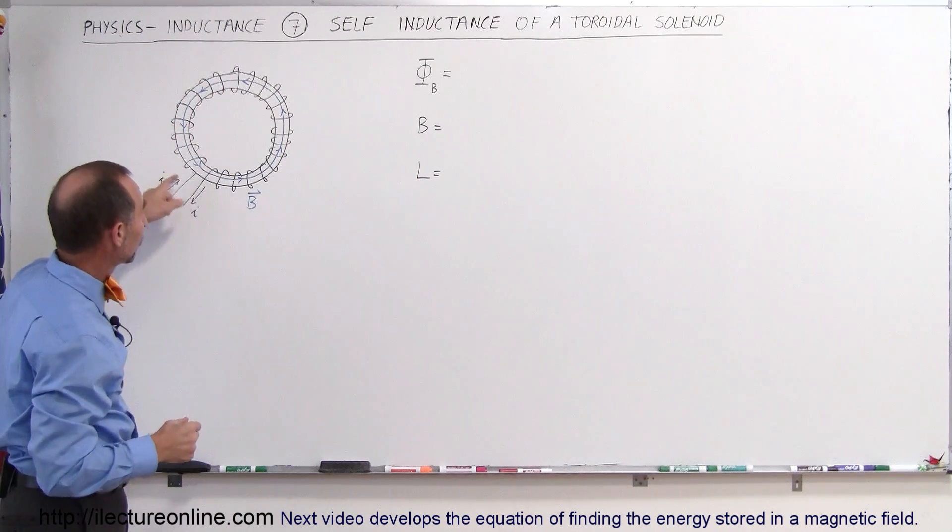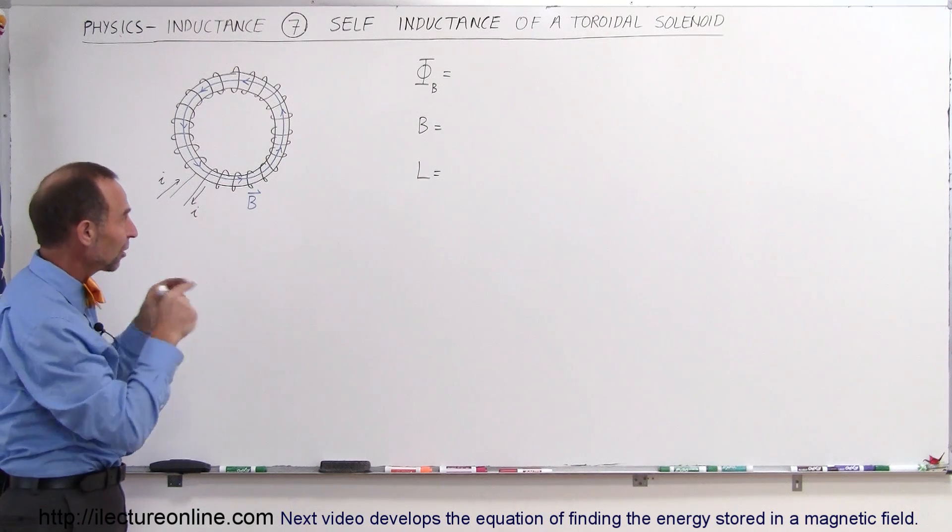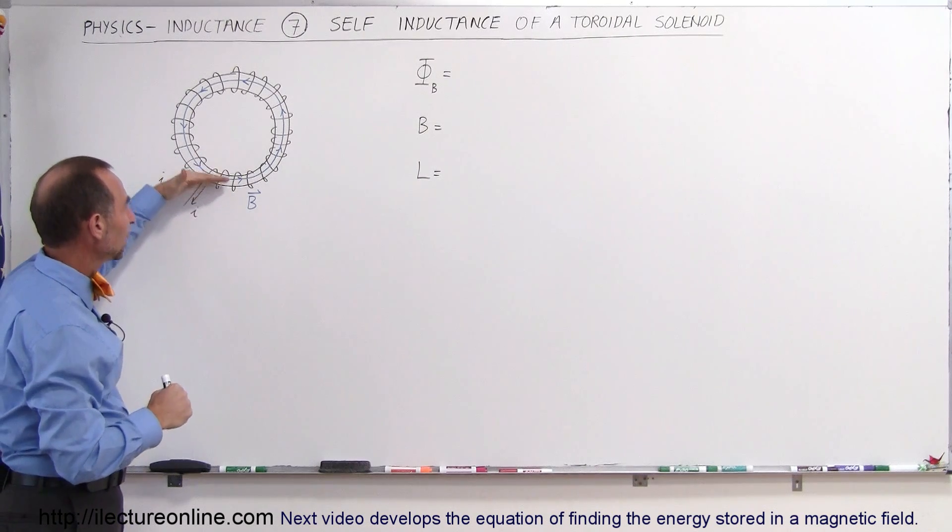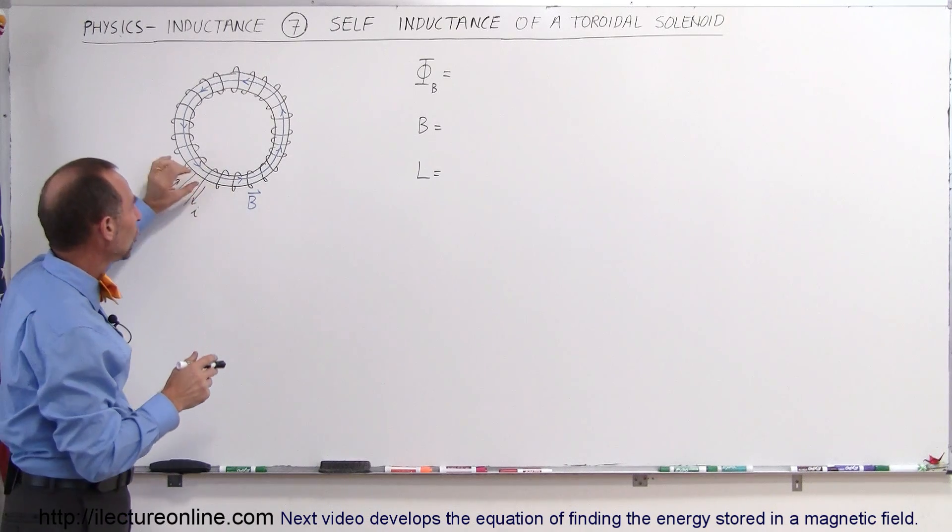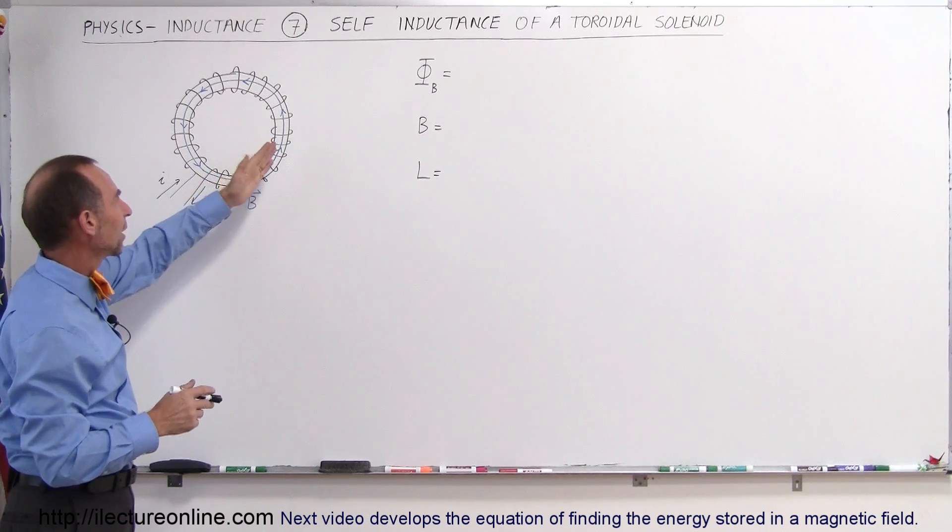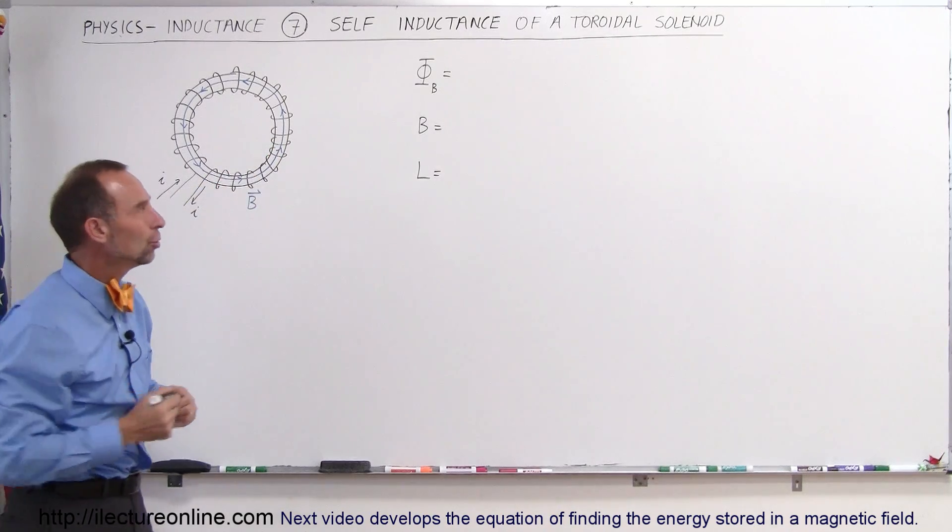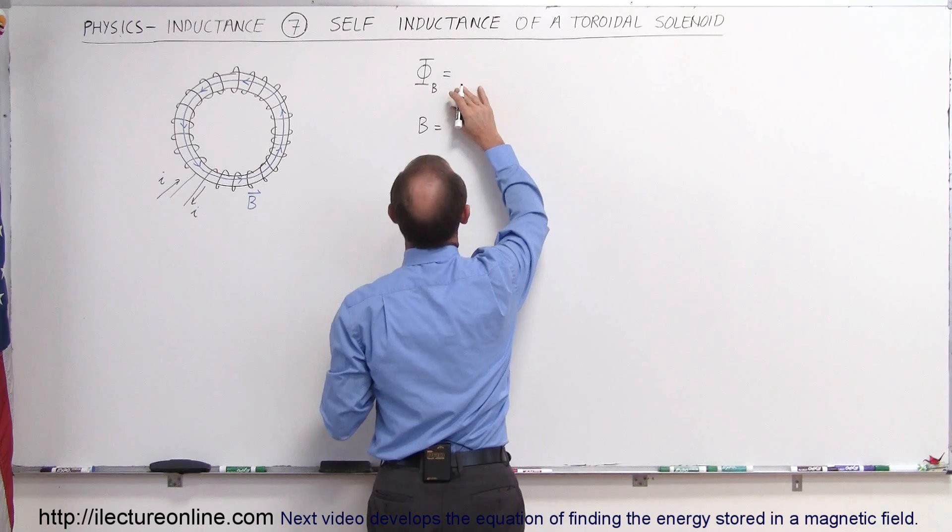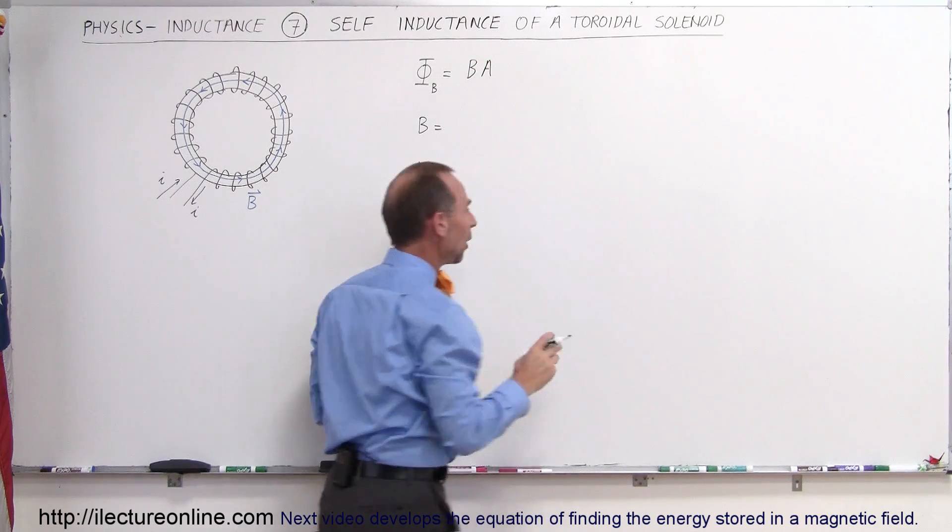So what is the flux through this tube? Well it would be the strength of the B field times the cross-sectional area. We can assume that with a toroidal solenoid that the B field is about the same magnitude all the way around in any direction and also in any location inside that tube. So we can say that the flux is equal to the B field times the cross-sectional area.